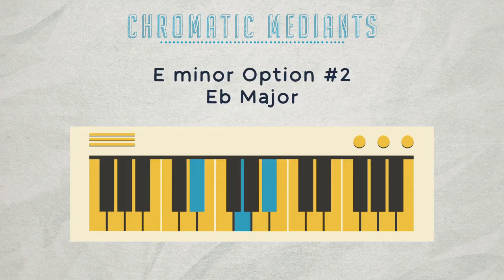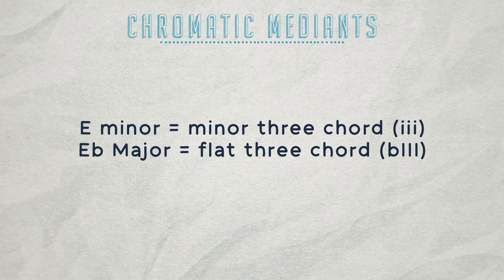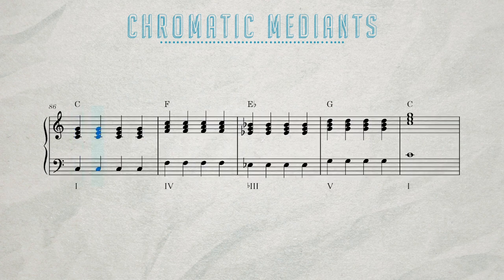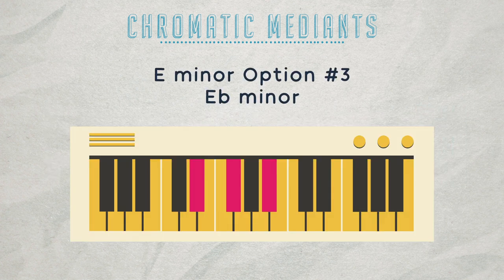Another option is an E flat major chord. This has two chromatic notes, E flat and B flat — this is what's called a flat three chord. And the final option for E minor is an E flat minor chord, where every note is chromatic. This chord is E minor one half step down.